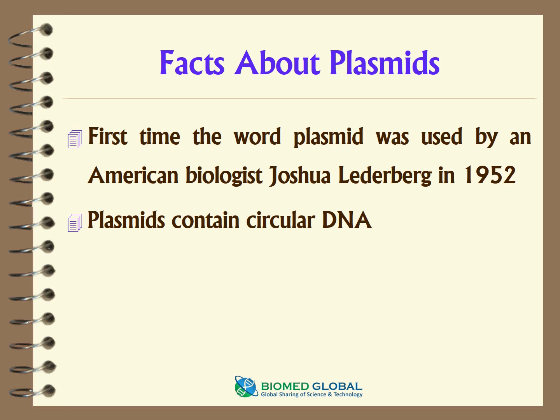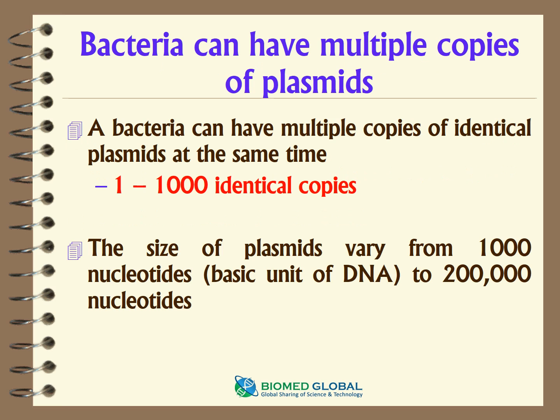Some interesting facts about plasmids. The word plasmid was first used by American biologist Joshua Lederberg in 1952, and plasmids always contain circular DNA. A bacterium can have a single or multiple copies of identical plasmids at the same time, ranging from one to one thousand identical copies. The size of plasmids varies from one thousand nucleotides (1 kb) to 200 kb.